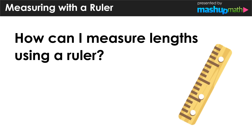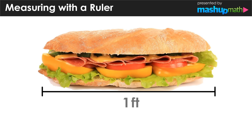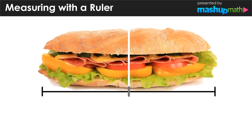Thank you for joining me on this lesson where we are going to explore how to find the length of objects using a ruler. Let's start by thinking about food — imagine a sandwich that is one foot long. One foot is exactly the same as 12 inches. They are two different units of measurement, and if we cut this sandwich in half, each half would be six inches long.